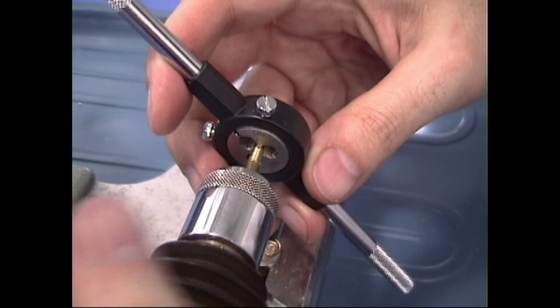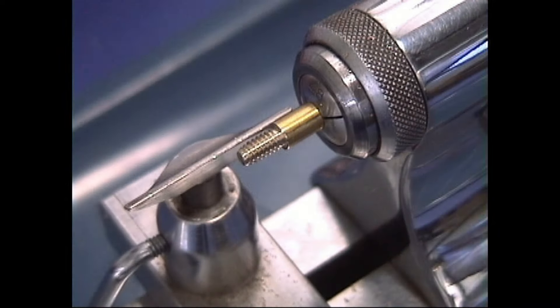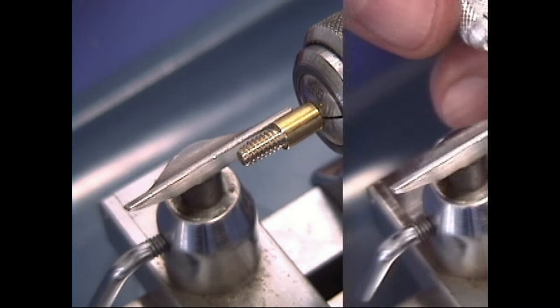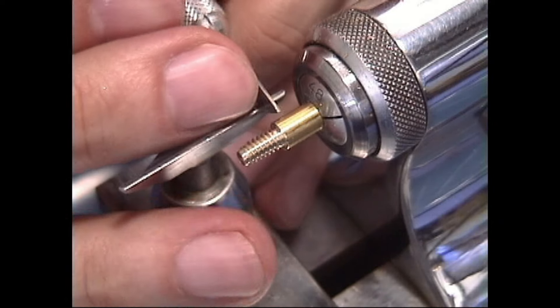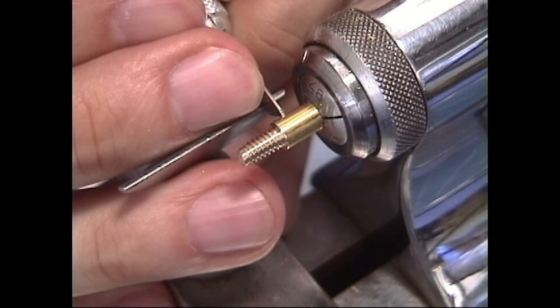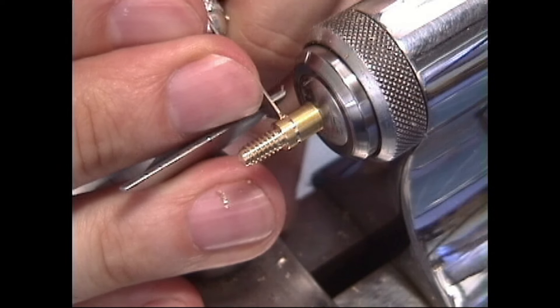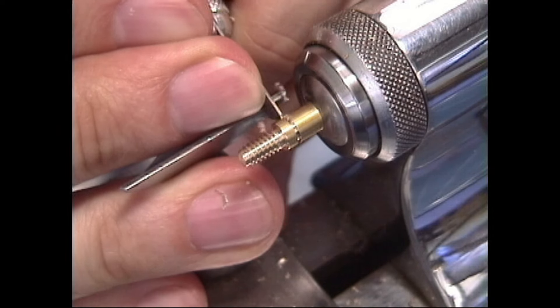And there we have our nicely made screw. Now the next thing we need to do is get our parting tool out and part that off. There's no magic distance that you need to go. I just take a guesstimate and start cutting through. And that looks pretty good. I'll just cut it right there.